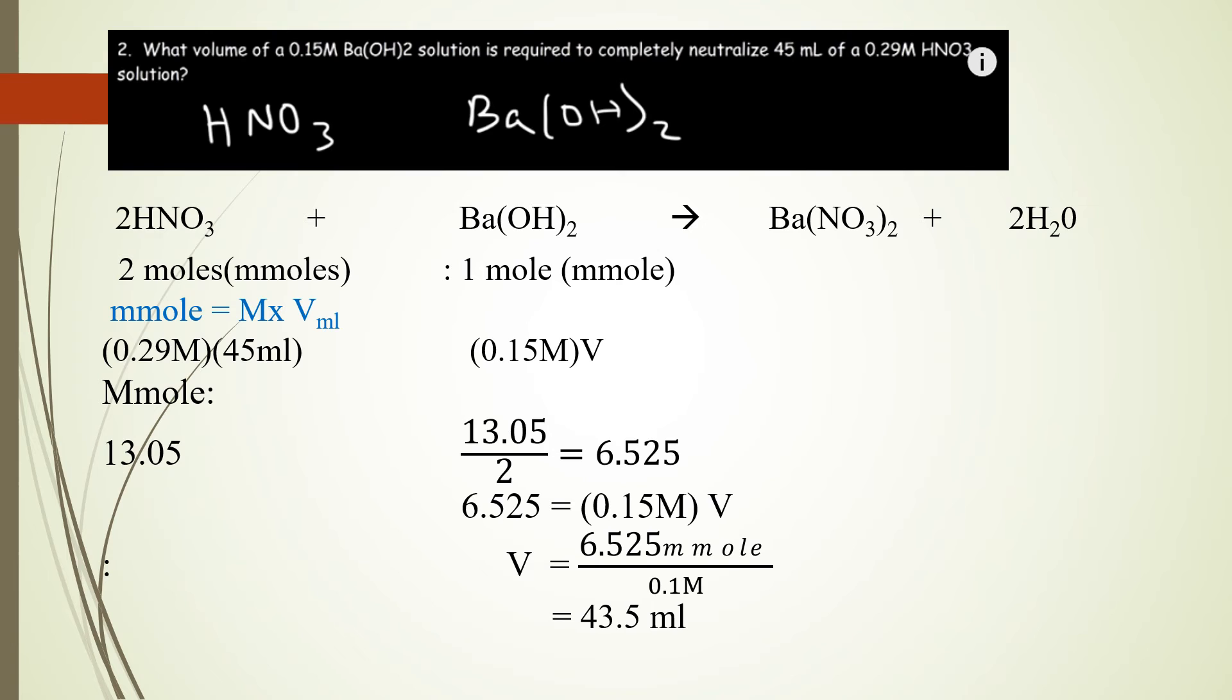0.29 molar and 45 ml will give me millimoles of nitric acid. And this is, multiplying them together, this is 13.05 millimoles.